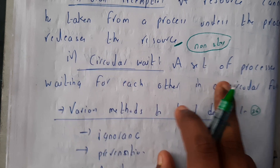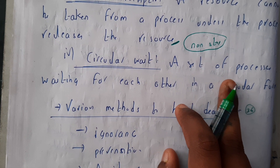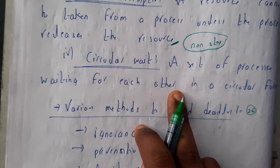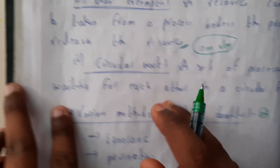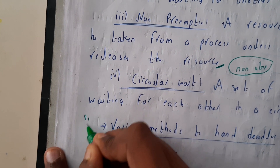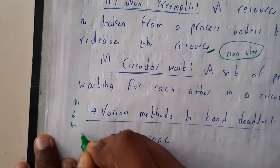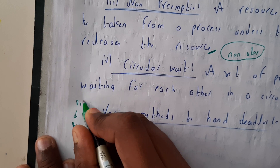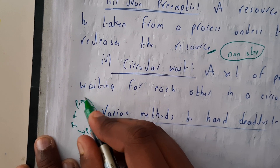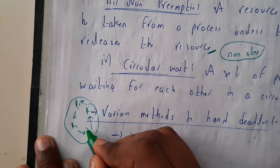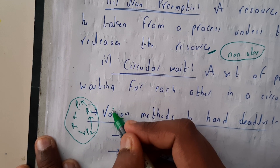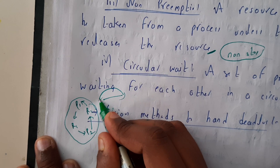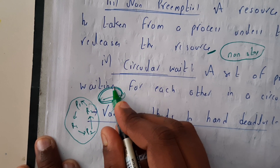The fourth reason is circular wait — a set of processes waiting for each other in a circular form. For example, process P1 needs resource R1, which is allocated to P2, and P2 needs R2, which is allocated to P1. P1 waits for P2, P2 waits for P3, and so on, forming a circular chain where the last process depends on the first.